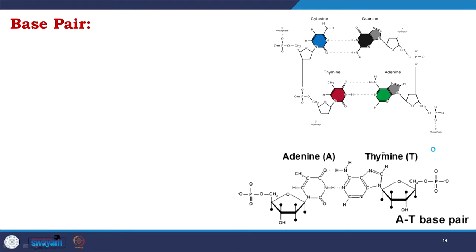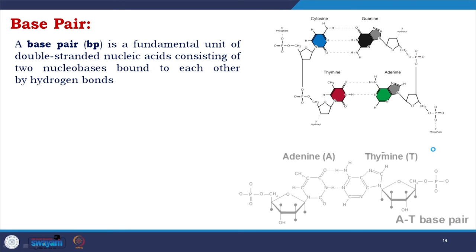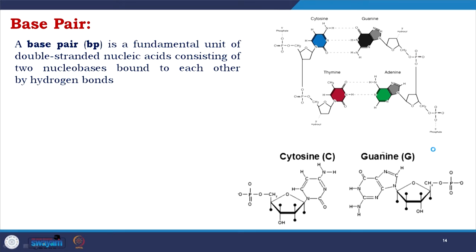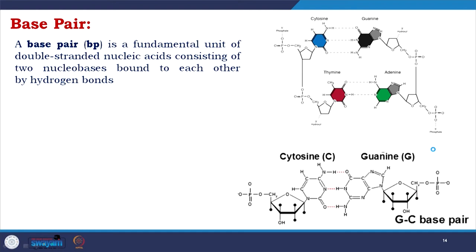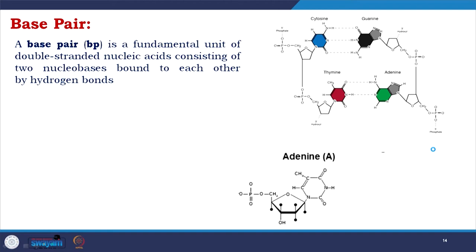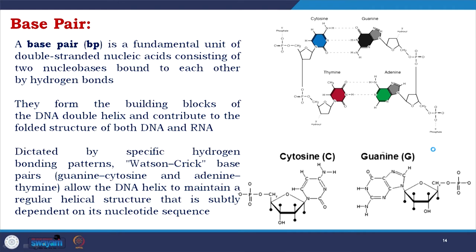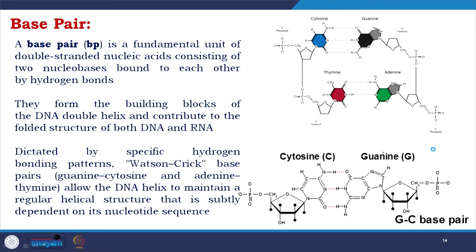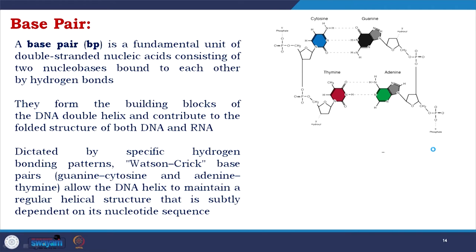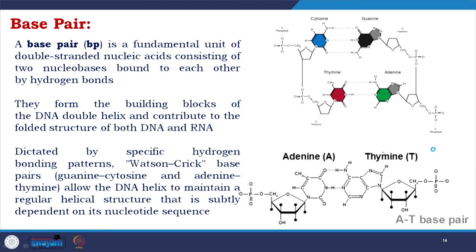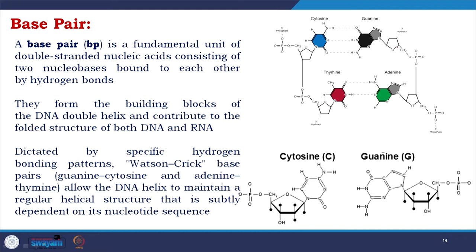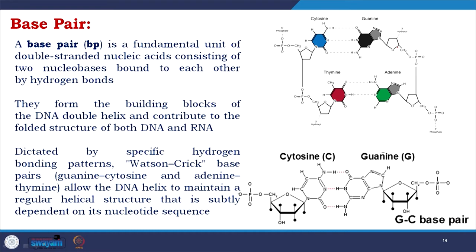Now we will talk about the basic properties of DNA. A base pair is a fundamental unit of double-stranded nucleic acids, consisting of two nucleobases bound to each other by hydrogen bonds. They form the building blocks of the DNA double helix and contribute to the folded structure of both DNA and RNA. Dictated by specific hydrogen bonding patterns, Watson-Crick base pairs allow the DNA helix to maintain a regular helical structure subtly dependent on its nucleotide sequence. There are three hydrogen bonds between cytosine and guanine, and two hydrogen bonds between thymine and adenine.